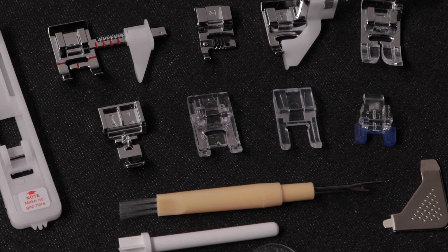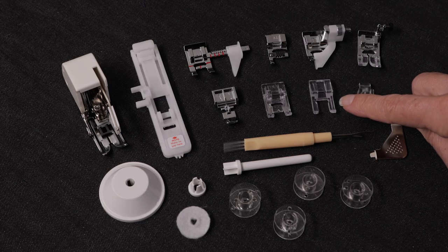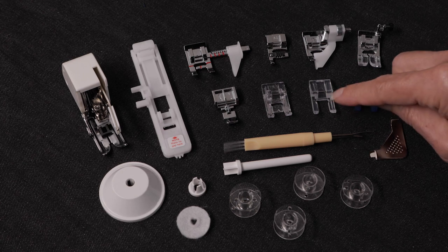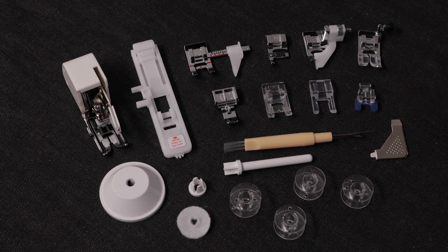This is an open toe foot, has a clear view in front of the needle, nice when you're sewing ribbons or trims. And this is the button sewing foot for attaching buttons by machine.